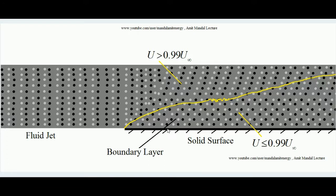The very first layer of fluid in immediate contact with the solid surface has zero velocity, because maximum shear force is exerted on those layers closest to the surface. If the solid surface itself is moving, then that first layer moves with the velocity of that surface — this is the no-slip condition.